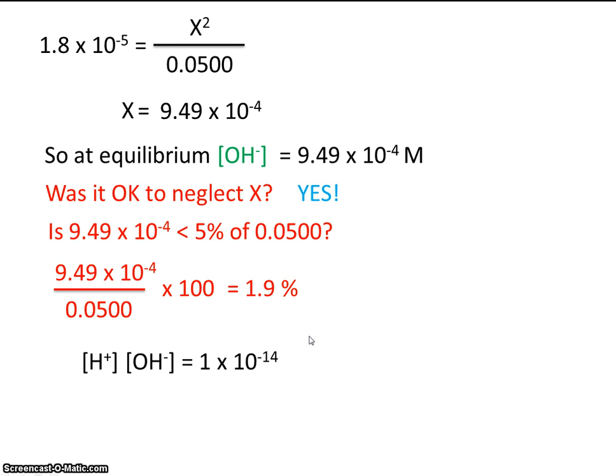All right, remember, we want to know the pH. And the pH is a measure of hydrogen ion concentration, not hydroxide ion concentration. But our x value told us the equilibrium concentration of hydroxide. So if we know the equilibrium concentration of hydroxide, we can solve for the equilibrium concentration of hydrogen ion. Turns out it was this.